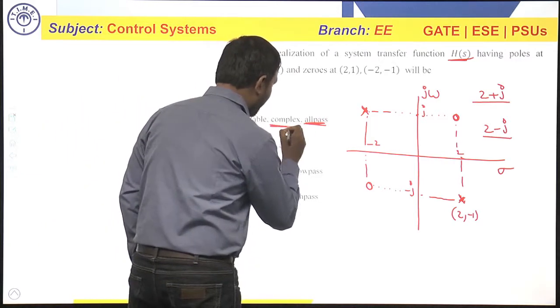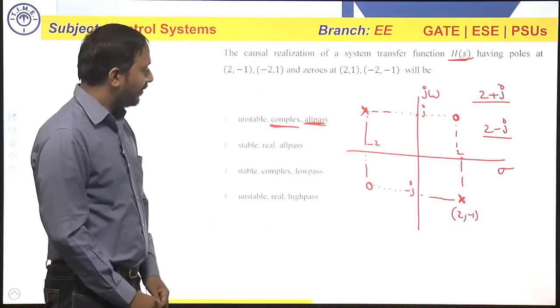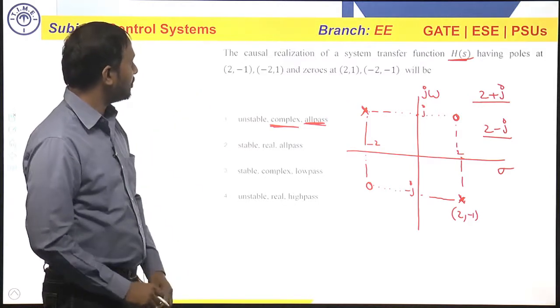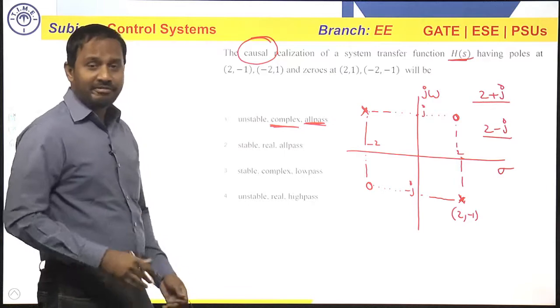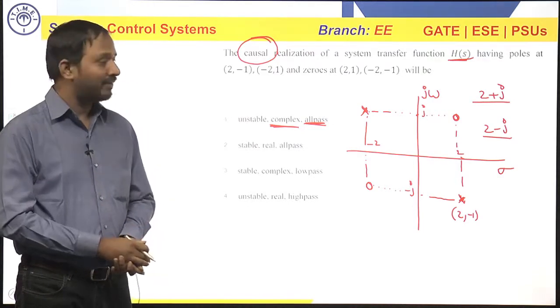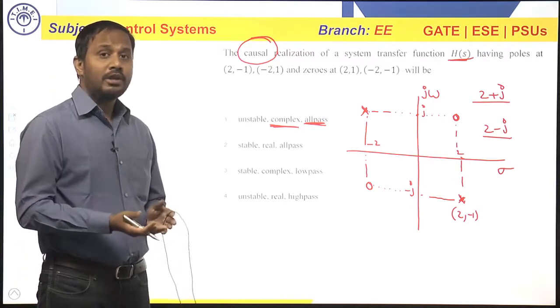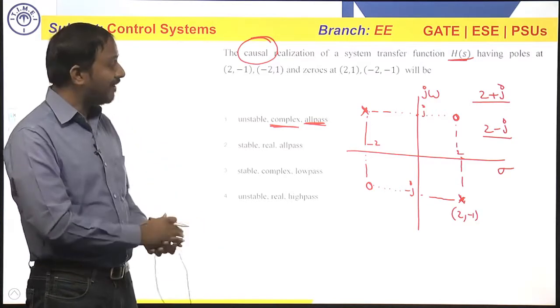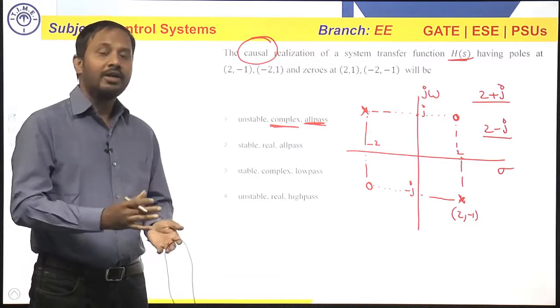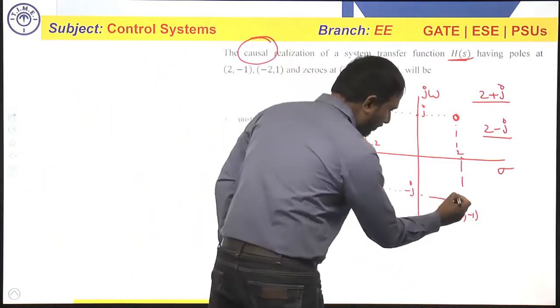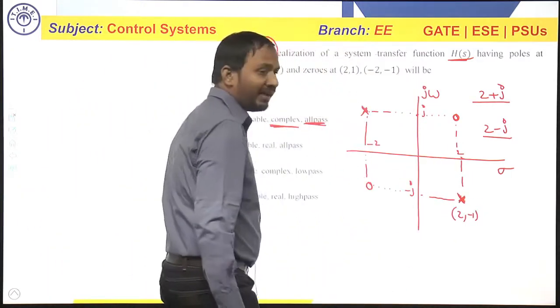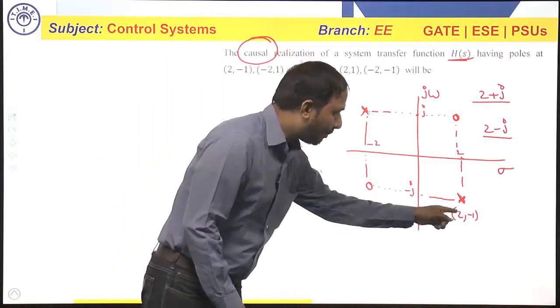So, this one is satisfied. And if you look at the given question, he said is a causal system. And we have one famous statement that for a causal LTI system to be stable, all the poles must lie on the left half of S-plane or the poles must have negative real parts. Now, if you observe, one pole is lying on the right half of S-plane, which is having a positive real part.